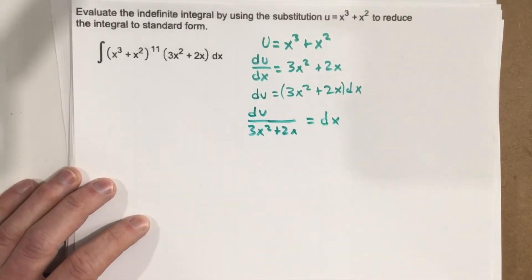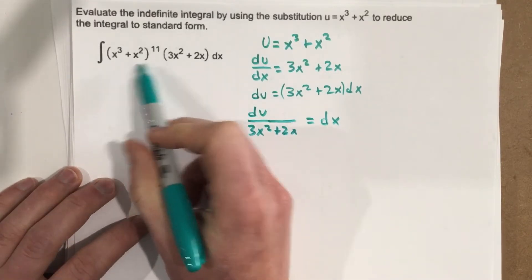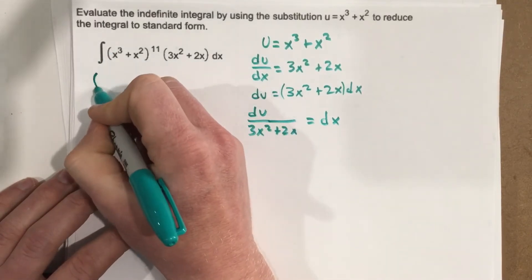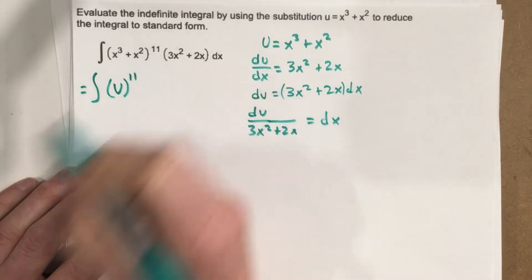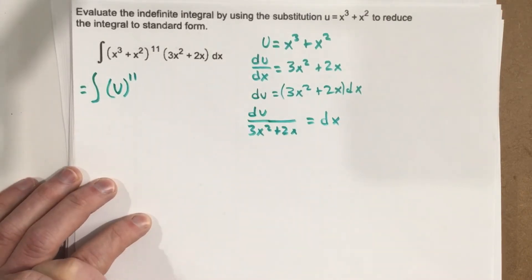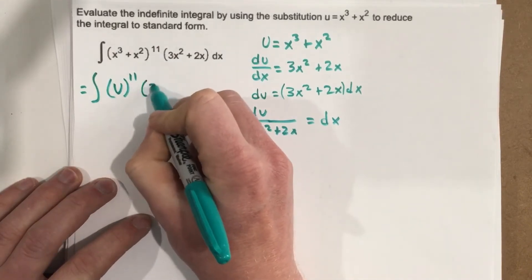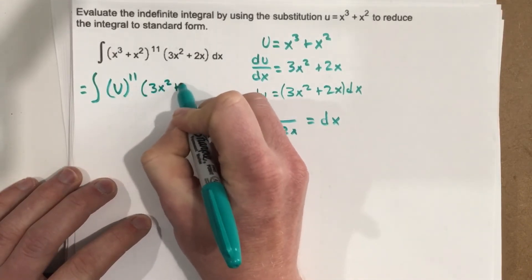And now this is when we can start to change our variables in here. So we get integral u to the 11th. And then you have 3x squared plus 2x.